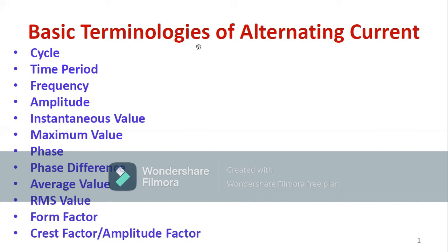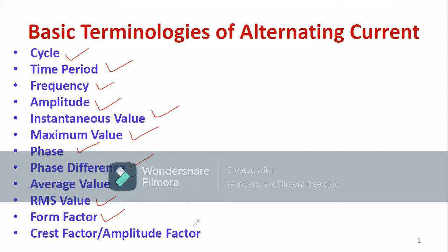Now let us come back to the playlist of basic electrical engineering. In this video I'll be discussing major basic terminologies of alternating current. The major terminologies of alternating currents are: cycle, time period, frequency, amplitude, instantaneous value, maximum value, phase, phase difference, average value, root mean square value, form factor, and crest factor or amplitude factor. Today I am going to focus mainly up to phase difference — that portion I will cover in this video.